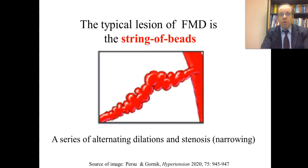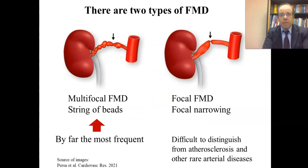This is a typical lesion of FMD, called the string of beads — a series of alternating dilations and stenoses, meaning narrowings. There are two types of FMD. The most typical and by far most frequent, 80 to 90% of cases, is multifocal FMD, characterized by the string of beads. Ten to 20% of patients have focal FMD, characterized by a focal narrowing, which is difficult to distinguish from atherosclerosis and other rare inflammatory or inherited arterial diseases.